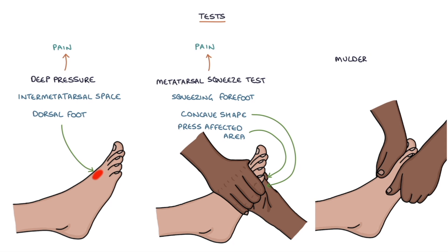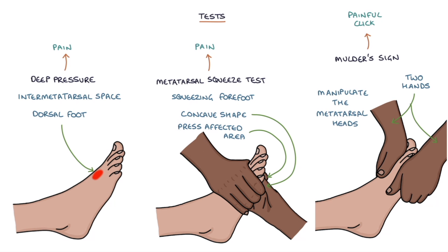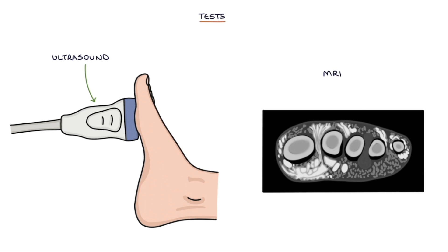Finally, there's Mulder's sign, which is a painful click felt when you use two hands on either side of the foot to manipulate the metatarsal heads in order to rub the neuroma. An ultrasound or MRI scan can be used to confirm the diagnosis of a Morton's neuroma.